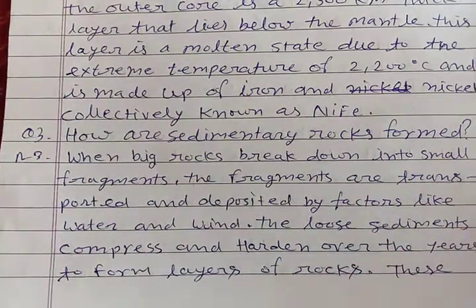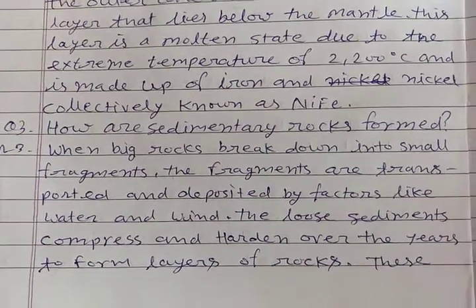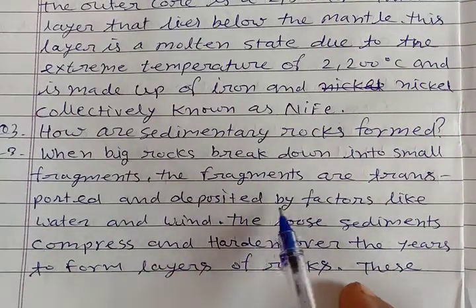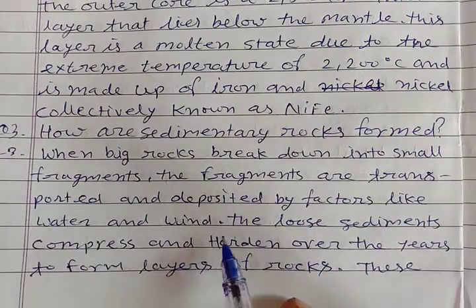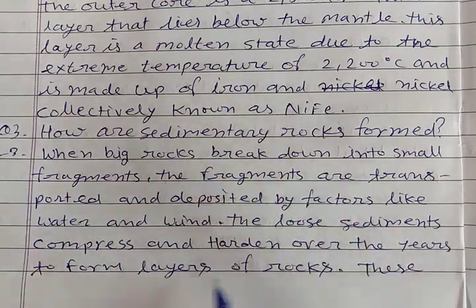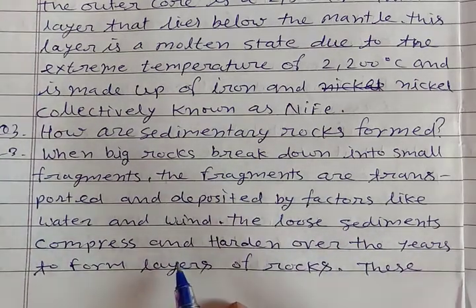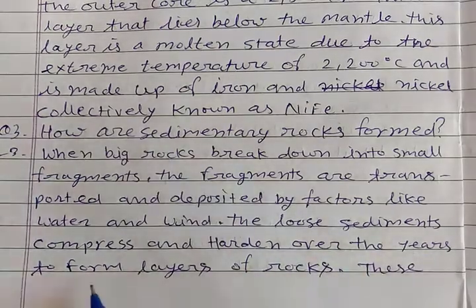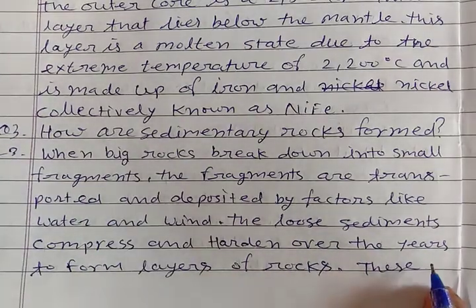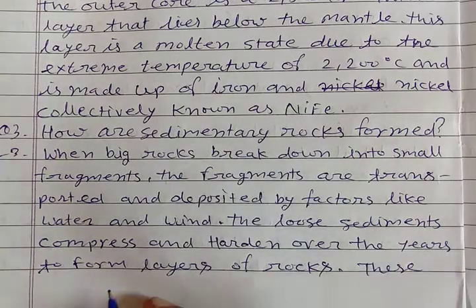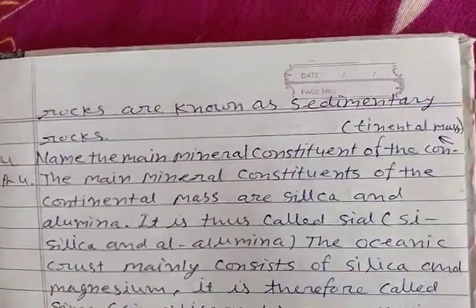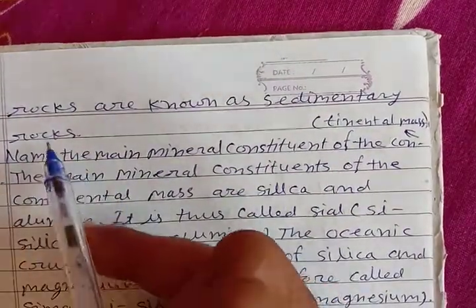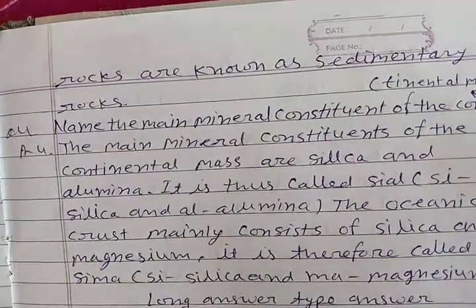Third question: how are sedimentary rocks formed? When big rocks break down into small fragments, the fragments are transported and deposited by factors like water and wind. The loose sediments compress and harden over the years to form layers of rocks. These rocks are known as sedimentary rocks.